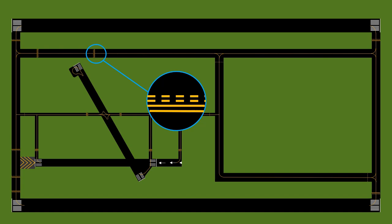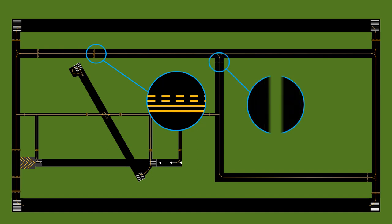If you are on the side with the dashed lines, you are permitted to cross without clearance from air traffic control. The next type is a taxiway hold short marking — you don't have to stop at these unless specifically instructed by air traffic control. It's simply a single dashed line.